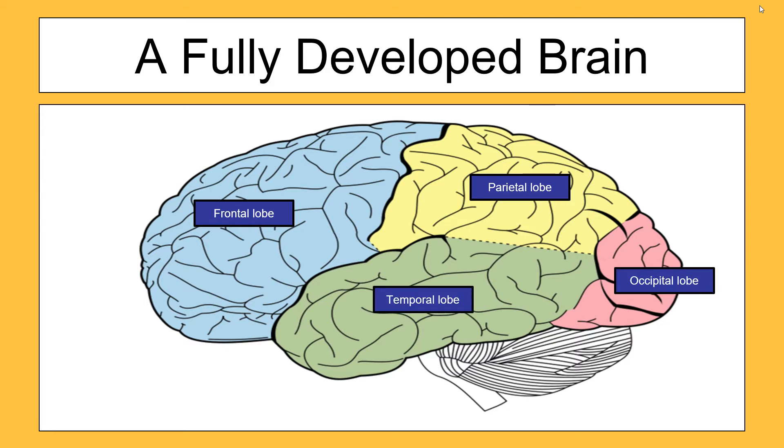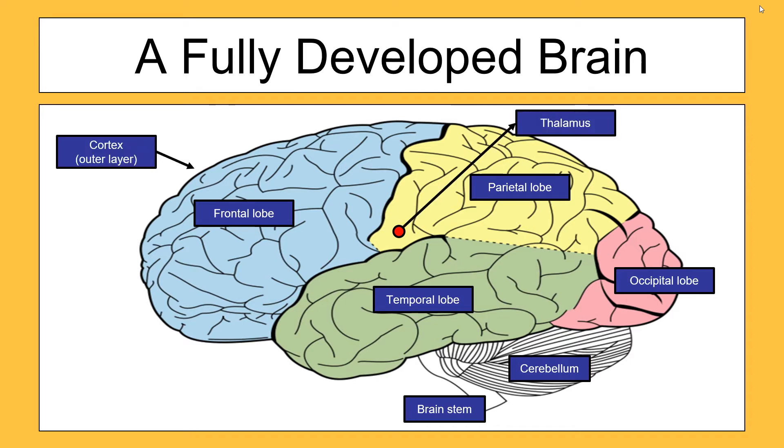But the areas you're more likely to get questioned on in this part of the exam are the cerebellum, the brainstem, deep in the middle of the brain the thalamus, and the outer layer of the brain known as the cortex. So the four key areas at the end there, we just need to know what they do.